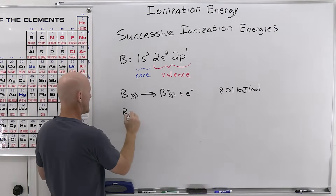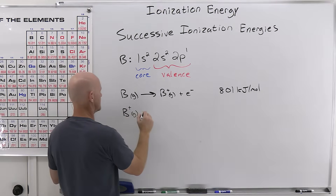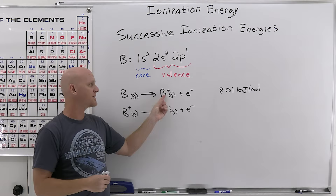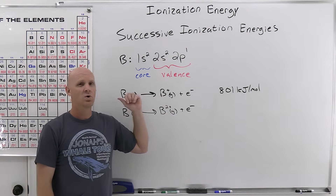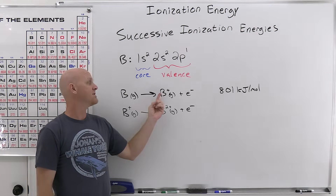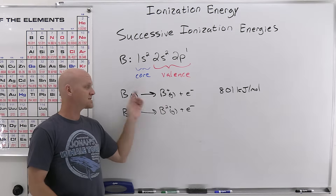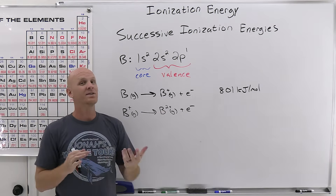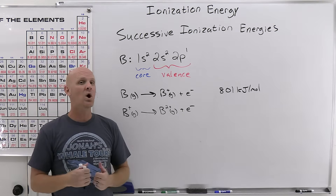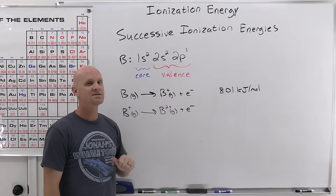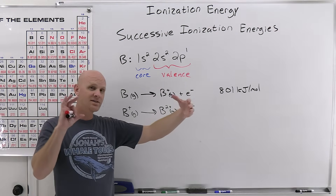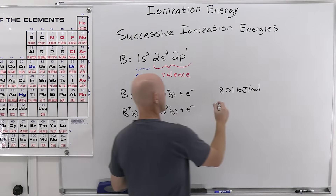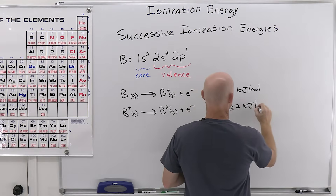When you remove a second electron from boron, it has already gotten smaller after losing the first electron — ionic radius is smaller than atomic radius. With the ion smaller, the remaining electrons are closer to the nucleus, more attracted to it, and harder to remove. So successive ionization energies increase. The second ionization energy of boron is 2427 kilojoules per mole — a pretty substantial increase.